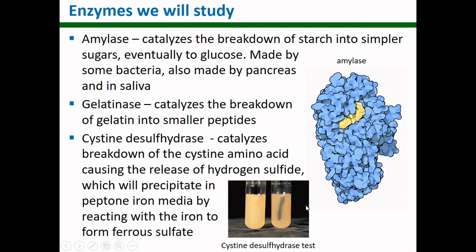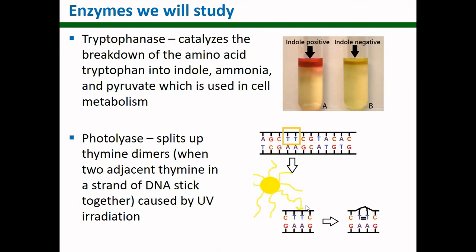Tryptophan — everyone associates it with turkey, but the long story short is that there isn't enough tryptophan in turkey to actually make you tired; at Thanksgiving you get tired because you overeat. Tryptophanase breaks down tryptophan into indole, ammonia, and pyruvate, all of which can be used in the cell. Photolyase — remember when UV light created those thymine dimers in bacterial cells and killed them? Well, the enzyme photolyase can break those thymine dimers up and save the cell before it dies.